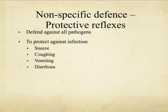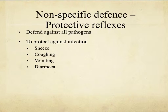Moving on to the protective reflexes: sneezing, coughing, vomiting, and diarrhea. The idea is to project the microbes out of the systems as quickly as possible. Sneezing is caused by stimulating the nerves within the nose. Coughing occurs in the respiratory tract through the trachea and bronchi. Vomiting is stimulated in the brain but contracts the stomach muscles. Diarrhea is when the small and large intestine are stimulated to produce muscle spasms.